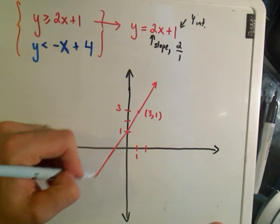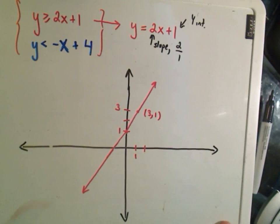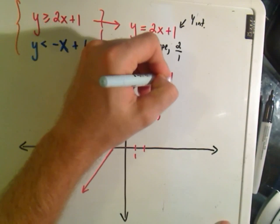But we needed the equation, we need the graph of the inequality. Okay, so here's just the graph of a line, okay, kind of a, hopefully not too horrible of a line. So this is 2x plus 1.